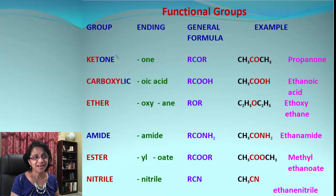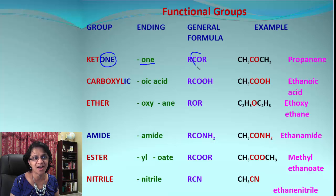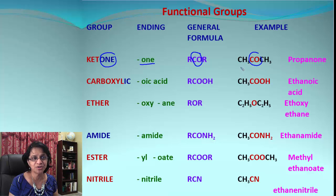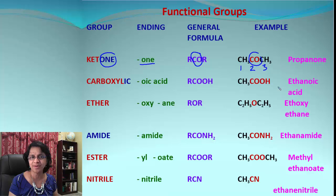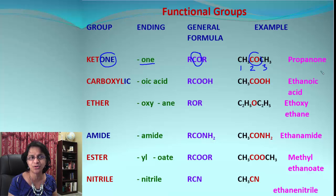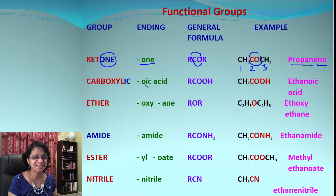Ketones all end in '-one' and always have the carbonyl C=O group. In this case we count all carbon atoms — we get three, which corresponds to propane — and since it belongs to the ketone family because of the C=O group, we add '-one' to get propanone.